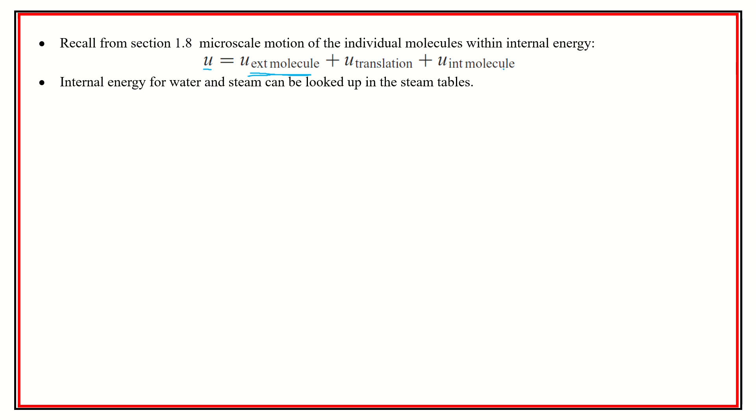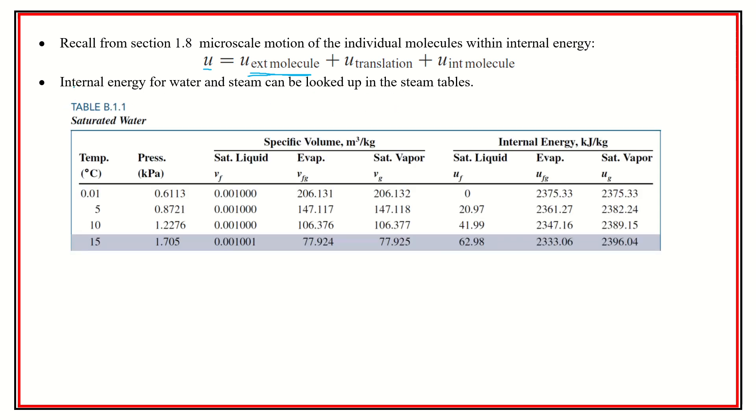Internal energy for water and steam can be looked up in the steam tables. So when we're looking up u, we can go to internal energy and we can find, and just like specific volume, we could have two different internal energies on the vapor dome. So we have a vapor dome, and at a particular temperature and pressure, we have the UF.